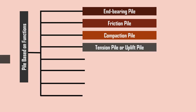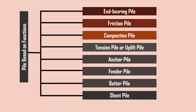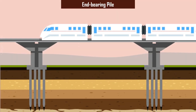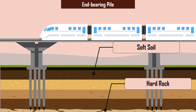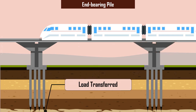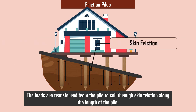or uplift pile, anchor pile, fender pile, batter pile, and sheet pile. End bearing pile: this type of pile is used to transfer load from water or soft soil to the hard rock below. Here all the load acting on the pile are transferred to the lower end of the pile.